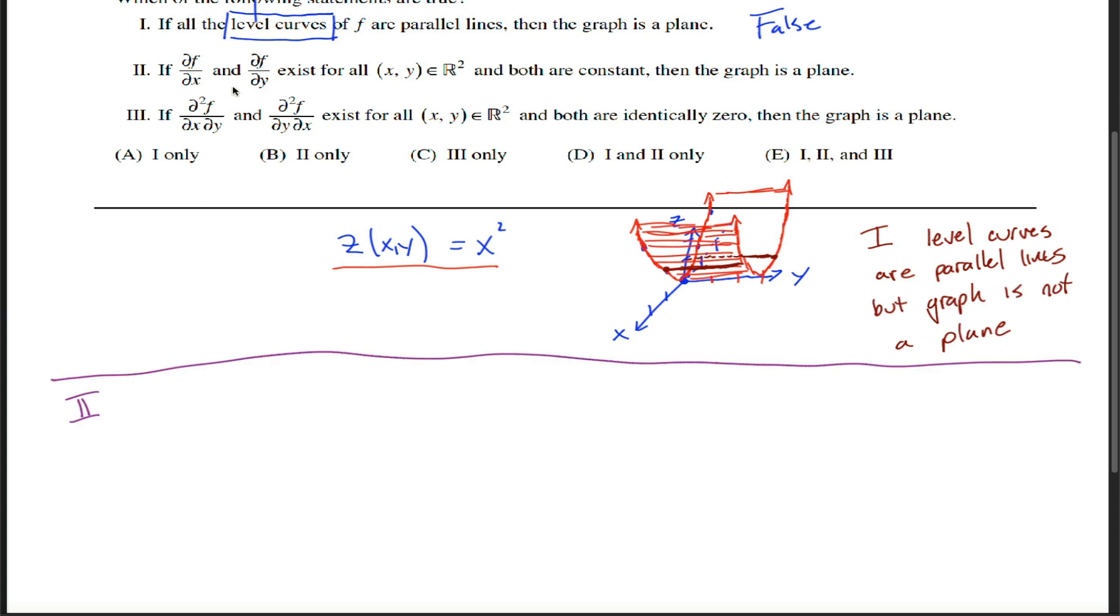What about statement 2? Statement 2 says the derivative of this function with respect to x and the derivative of this function with respect to y exist for all x and y, and both are constant. And so the question is, does that imply that the graph is a plane?